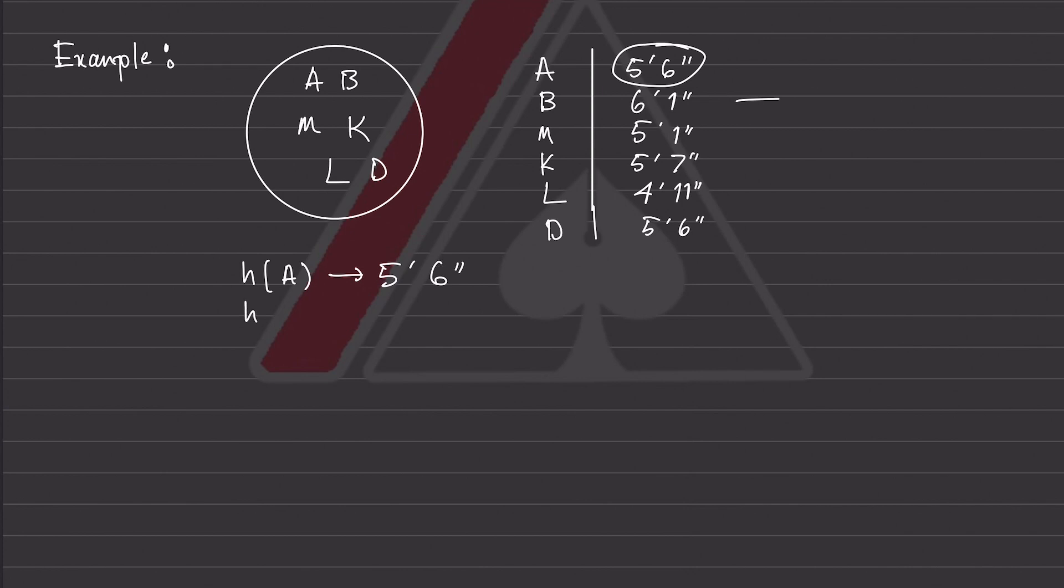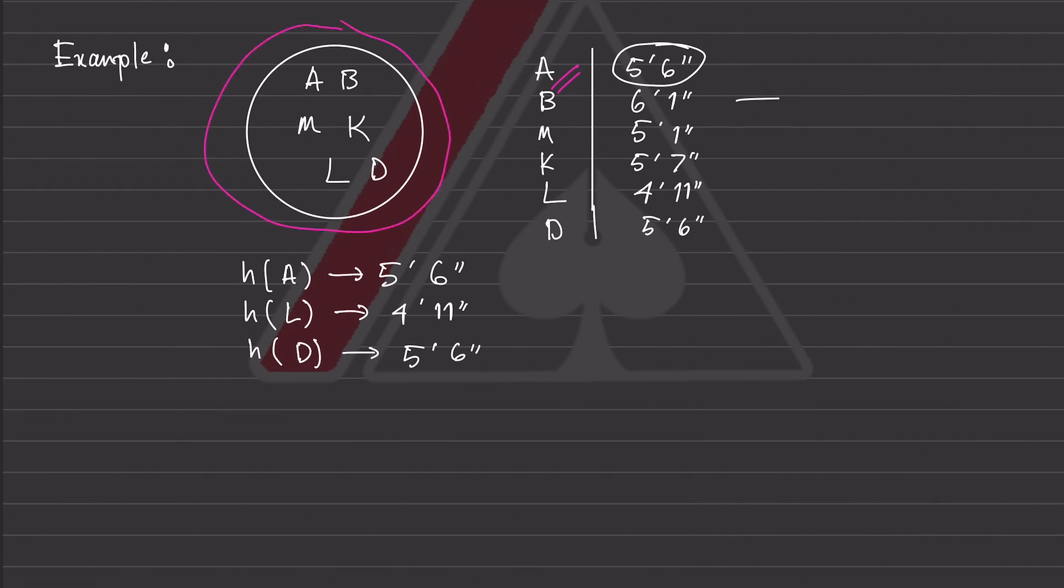If we do the same for Leonard, we get his height, which is 4'11". And this should also be the same for Dennis, right? When we input Dennis, we should get the output of 5'6". This all makes sense. As long as we're providing with a valid input that's within our playground, we should be getting a valid output.